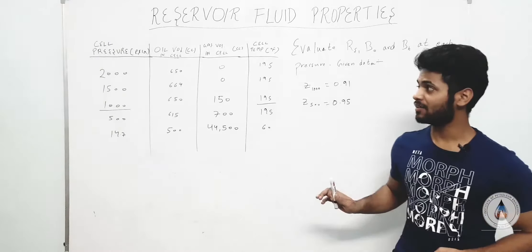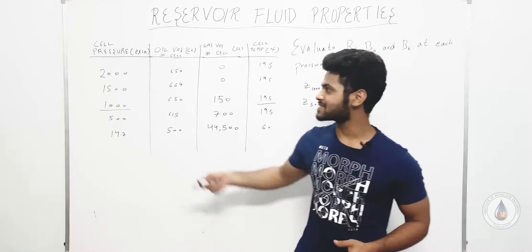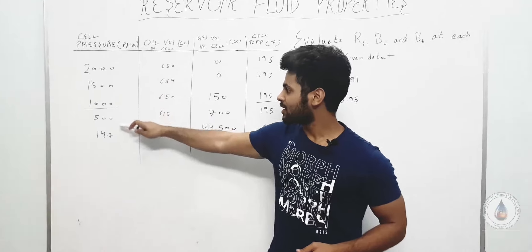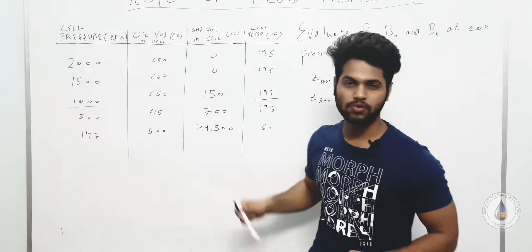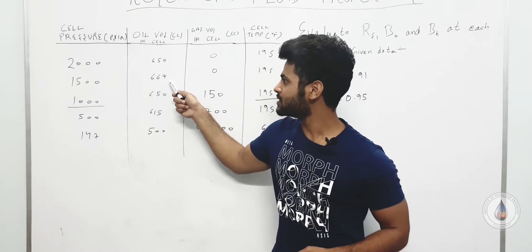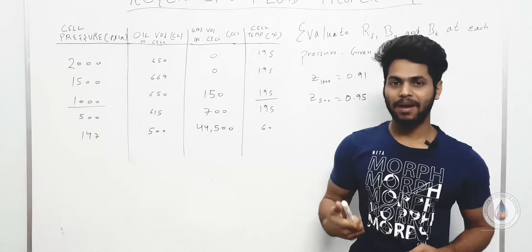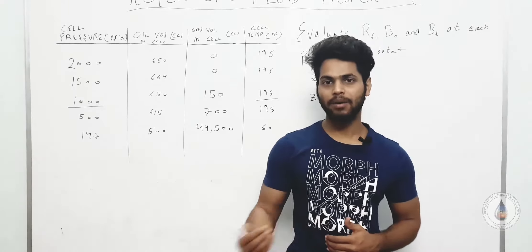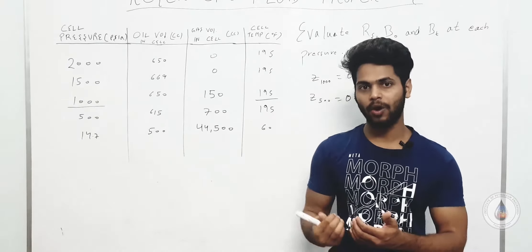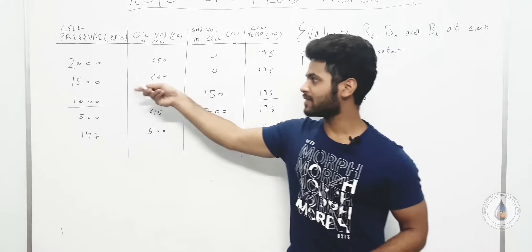In this particular question we have been given that there's a cell and in that cell we have taken an oil sample. The oil sample at starting condition is at 2000 PSIA. As I decrease my pressure, there are certain changes in my oil and gas volume. First, as I decrease my pressure, my oil volume is increasing from 650 cc to 669 cc. This is because above bubble point pressure, if I am decreasing pressure, my oil volume will increase because the contracted oil will start to expand.